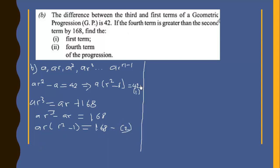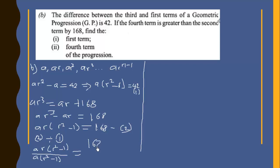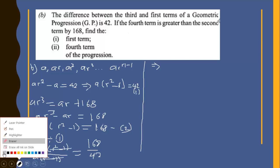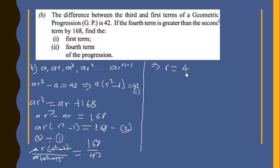Dividing equation 2 by equation 1: ar(r² − 1) over a(r² − 1) = 168/42. The a and (r² − 1) terms cancel, leaving r = 4. So the common ratio is 4 because 168 divided by 42 is 4.